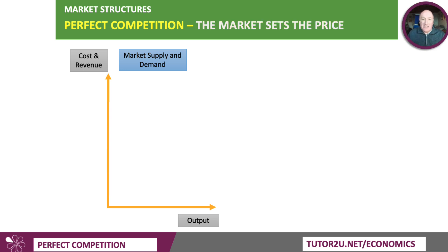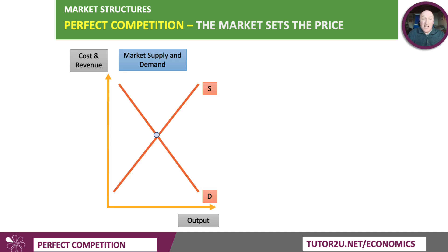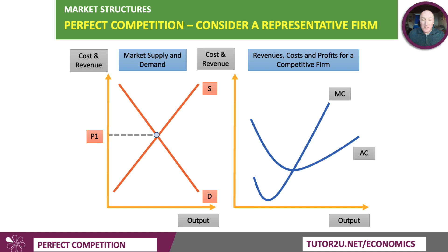Looking at the market side first — market supply and demand — market demand is downward sloping; that's the sum of all individual consumer demand. Likewise, the market supply curve is the horizontal sum of all the firms' supply curves. So the market price is set by market forces, P1. On the right-hand side, I've superimposed some cost curves — marginal and average costs for the firm.